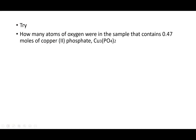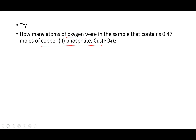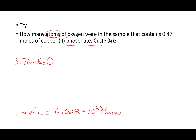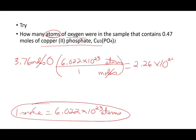I'm going to have you practice one more. We're going to deal with copper phosphate, but with oxygen. How many moles of oxygen did we end up with? We ended up with 3.76 moles of oxygen. Try this one on your own and then we'll do it. We've got 3.76 moles of oxygen and we want the number of atoms. One mole of anything is 6.022 × 10²³ atoms — that's Avogadro's number. Cancel moles, go to atoms: 3.76 × 6.022 × 10²³ gives 2.26 × 10²⁴ atoms.